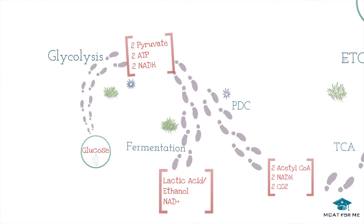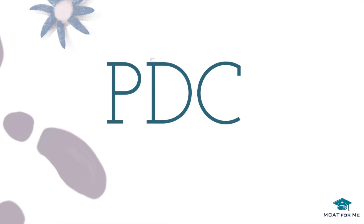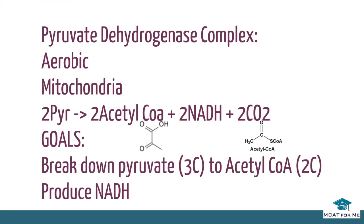If we do have oxygen, we can undergo the PDC — the pyruvate dehydrogenase complex. It's aerobic and occurs in the mitochondria, unlike fermentation which occurs in the cytoplasm. The main goal is to produce acetyl-CoA, breaking down this 3-carbon molecule into a 2-carbon molecule. The ultimate goal of glucose metabolism is to fully oxidize glucose — we're breaking it down from 6-carbon to 3-carbon and now to 2-carbon — while also producing NADH.